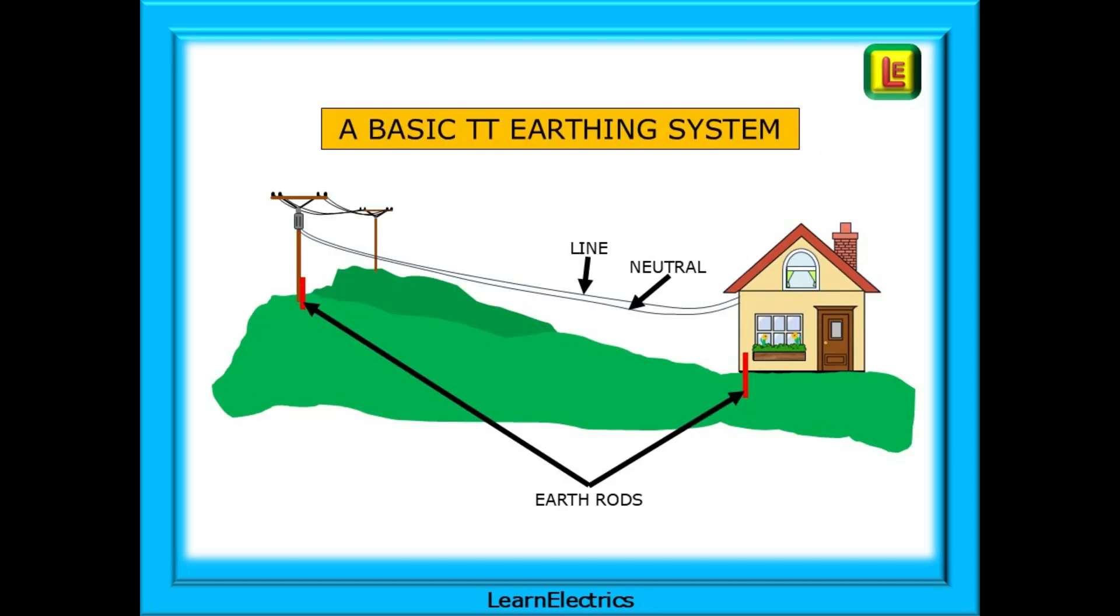A quick recap on TT systems will help. We have the supply cables, usually on overhead poles, but not always. There will be a supply transformer and fuses mounted on the poles, and a line and neutral will be taken off to the dwelling. There is no copper earth connection between the pole and the dwelling. Instead, an earth rod is installed at the pole and at the property.